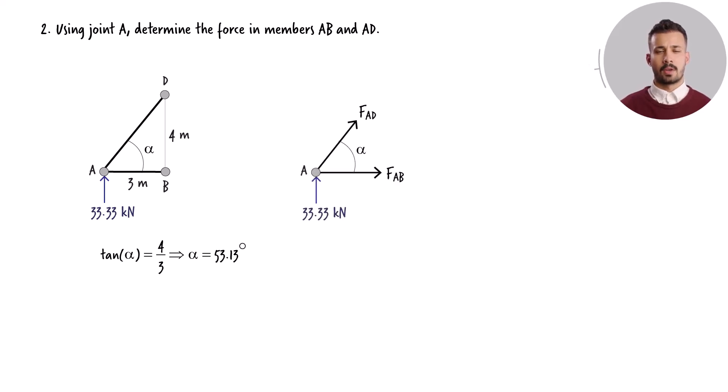Here's the free-body diagram corresponding to joint A. Two equilibrium equations can be formulated for this joint. Both the net forces in the x-direction and the y-direction have to equal zero. Solving these equations for the two unknown forces, we get the results.